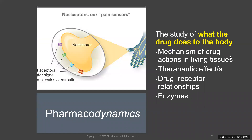So that was pharmacokinetics — the movement of drugs through the body. Now pharmacodynamics is another term you'll hear. This is the study of what the drug does to the body. Remember, kinetics is what the body does to the drug — how it metabolizes and eliminates it — while dynamics is what the drug actually does to the body.